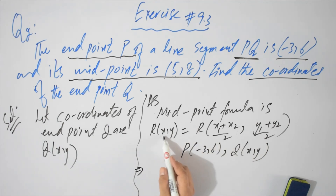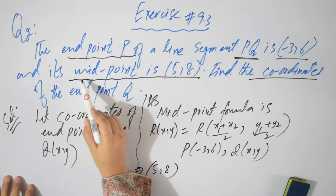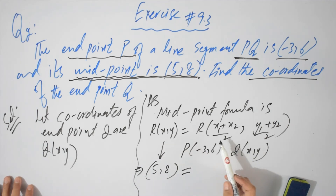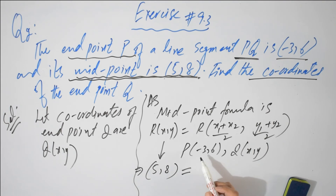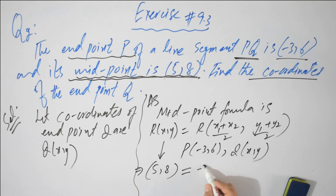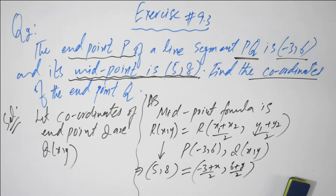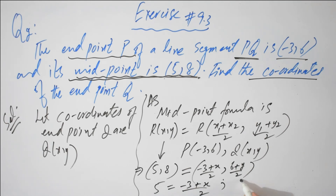So the midpoint equals the midpoint of P and Q. This is x1 and this is x2. So we get (minus 3 plus x) by 2 for the x-part, and y1 is 6 and y2 is y, giving (6 plus y) by 2 for the y-part — adding x-coordinates and y-coordinates respectively. These two ordered pairs are equal, so: 5 equals (minus 3 plus x) by 2, and 8 equals (6 plus y) by 2.